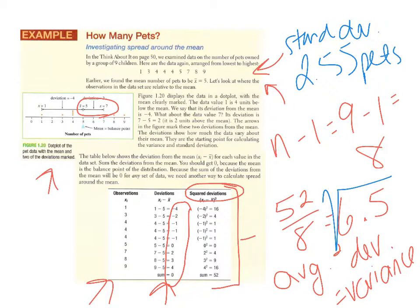That standard deviation of 2.55 is our average distance the values in the data set are from the mean. Some values are one or two spots away from the mean, some are four spots away, so 2.55 is the average deviation from the mean. That's how we calculate it — and we'll show you how to do this on the calculator rather than by hand.